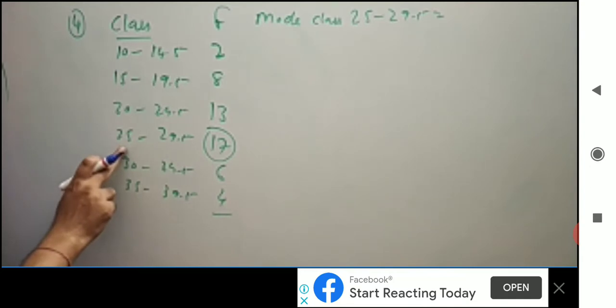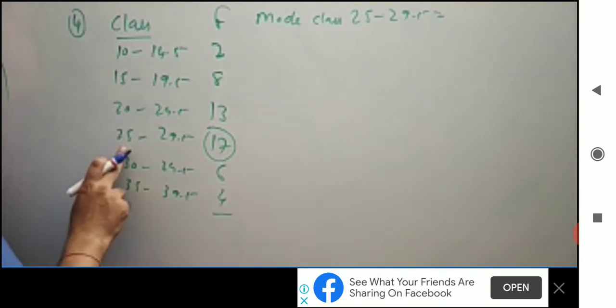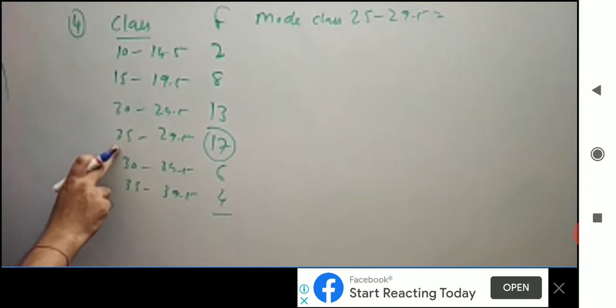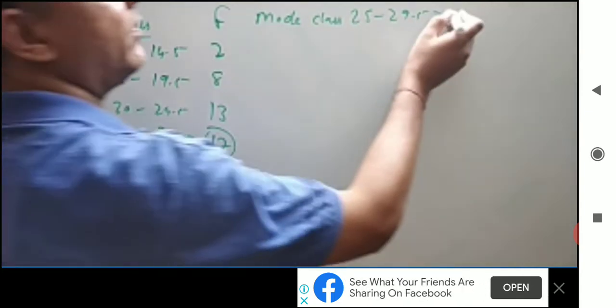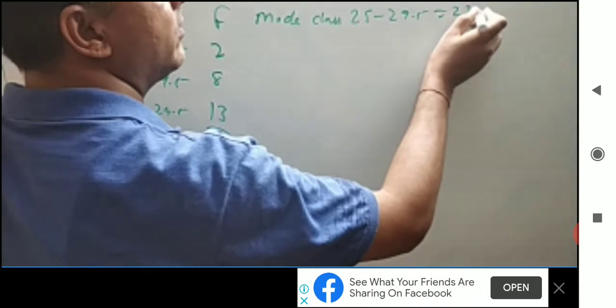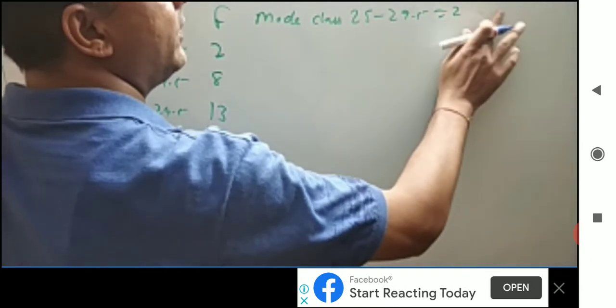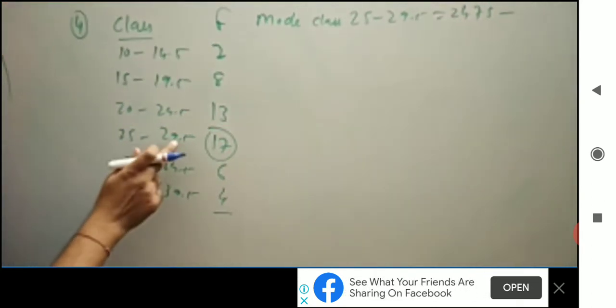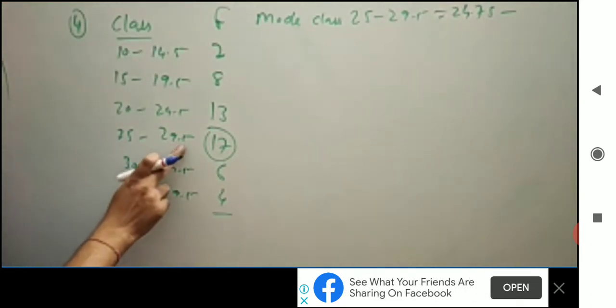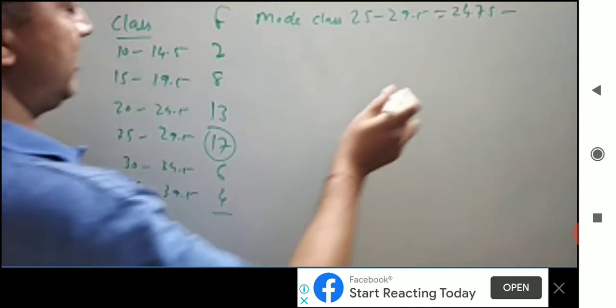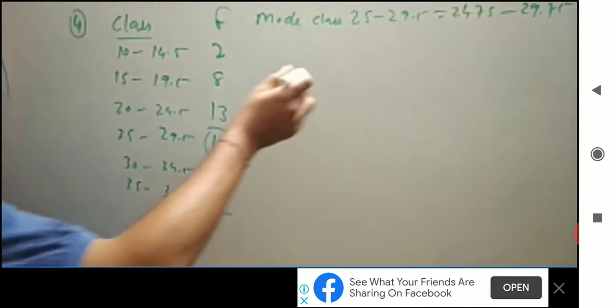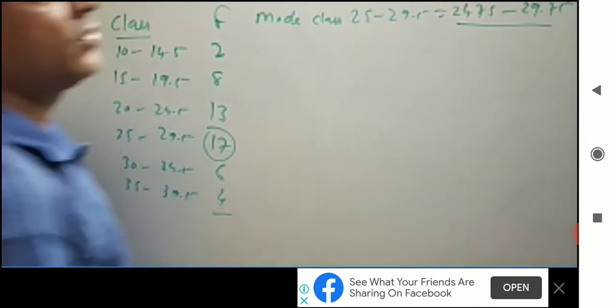Now you have to convert this. 24.5 plus 25 divided by 2, what is the value? 24.75. Now here, upper value 29.5 plus 30 divided by 2, so 29.75. So your class is 24.75 to 29.75.